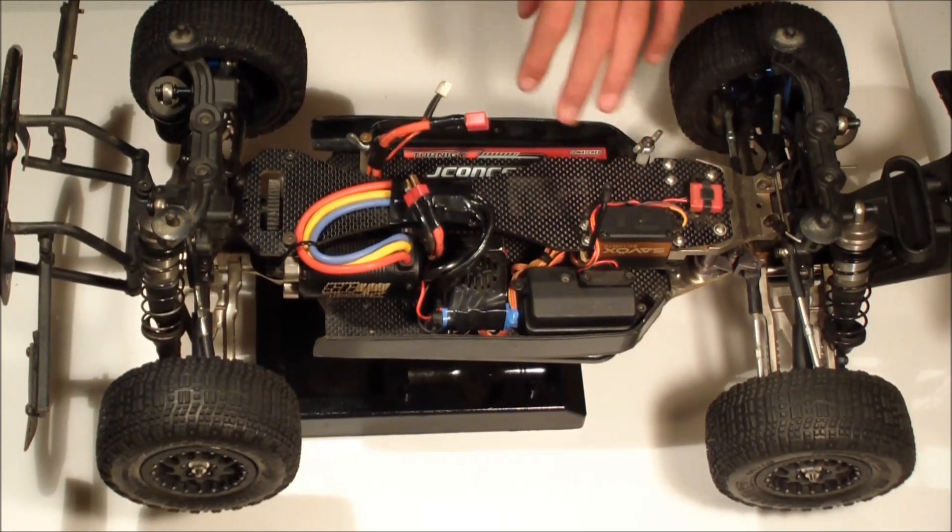Right here I'm running my Slash two-wheel drive receiver box with my Spectrum DS300 receiver in there, and then I got my My Laps transponder right here. Some people say they're not good to run on carbon fiber, but it's worked fine, so it's a good place to put it.